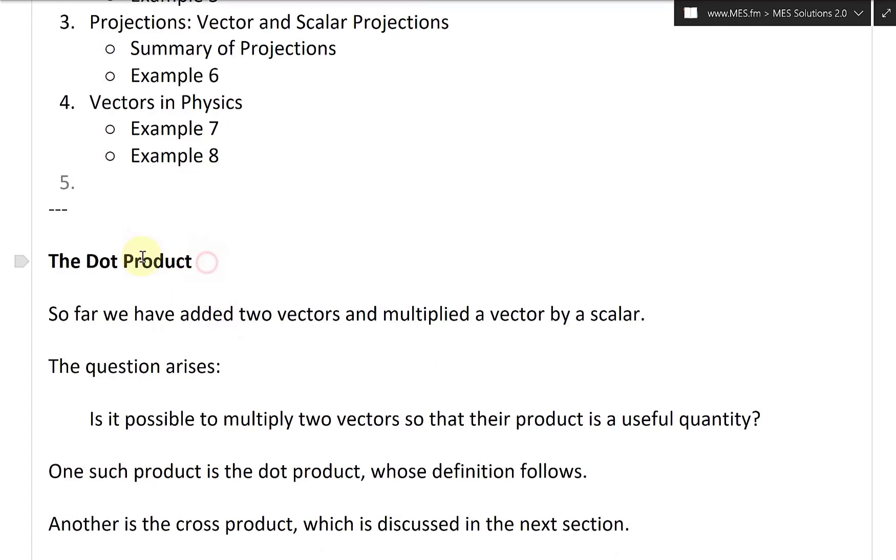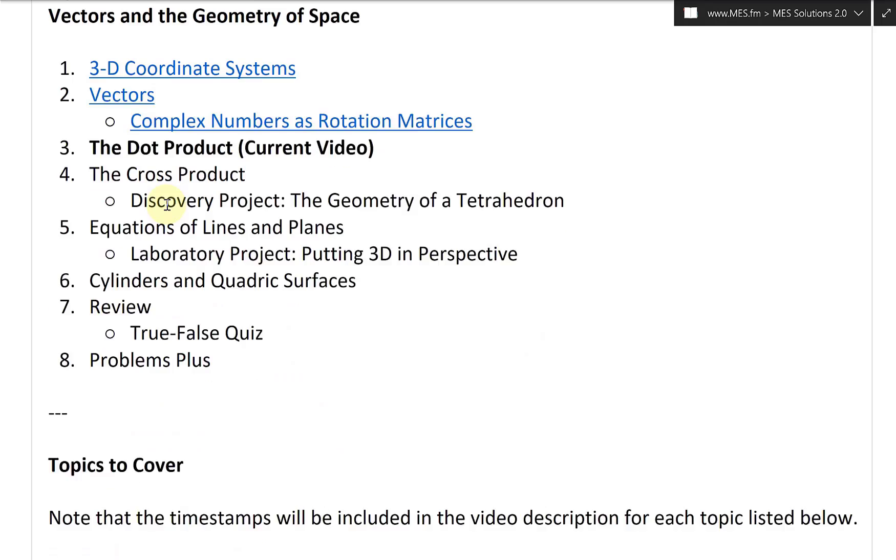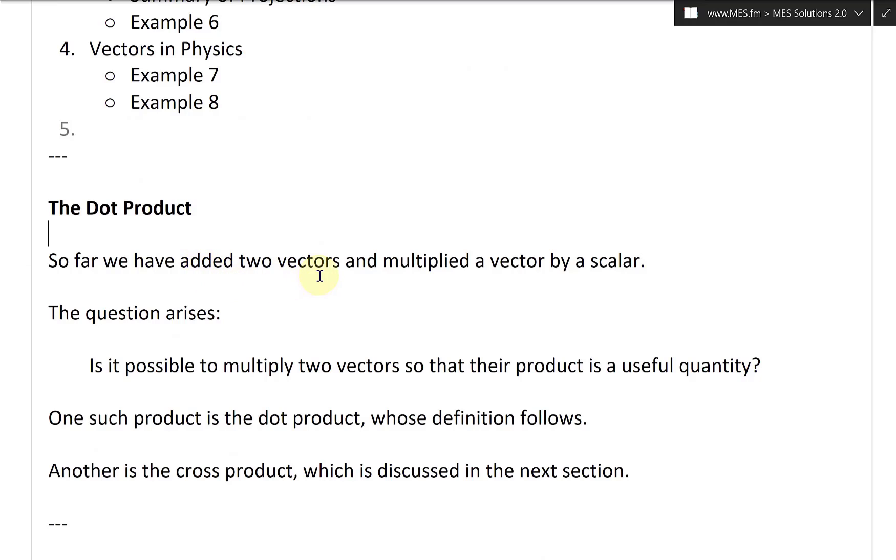All right, so now let's finally jump right in and look at the dot product. So far we've added two vectors and multiplied a vector by a scalar. We just added vectors and we multiplied vectors by a scalar.